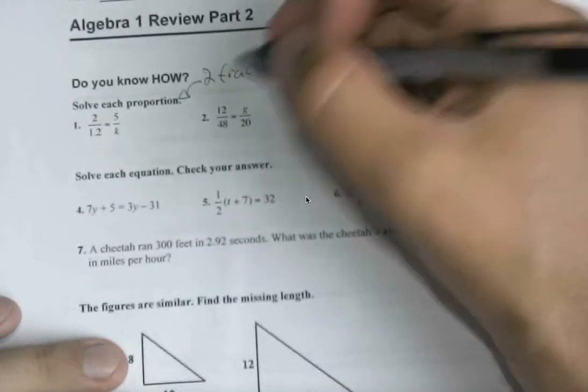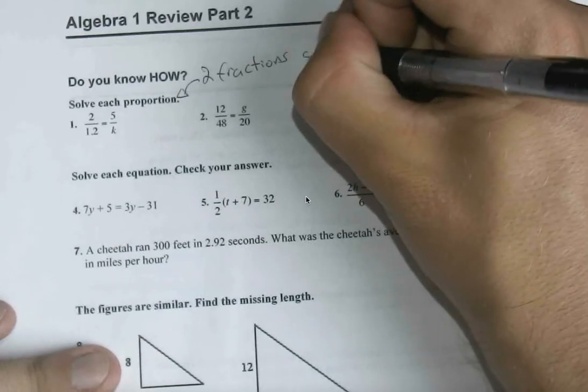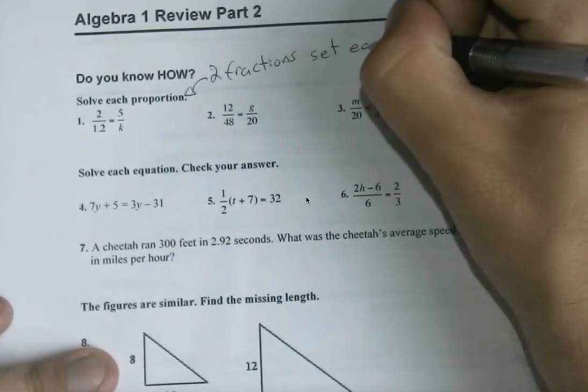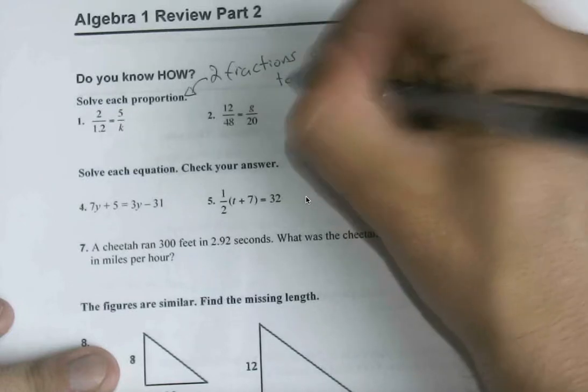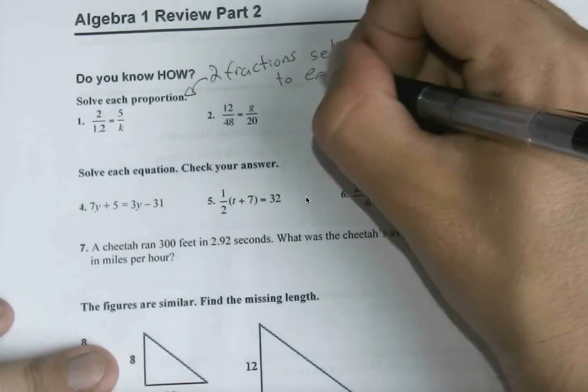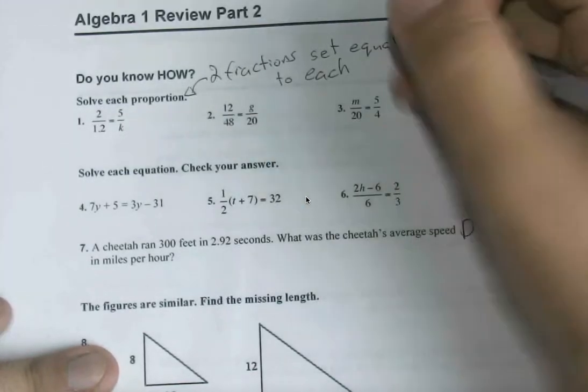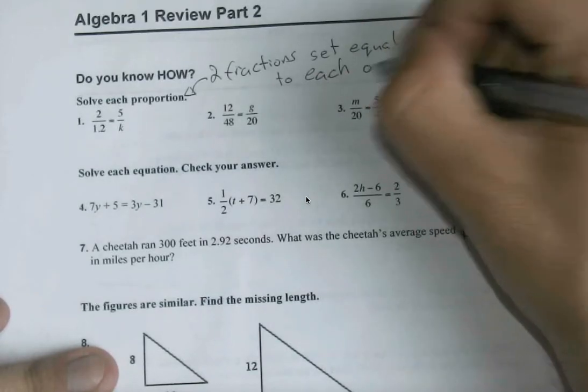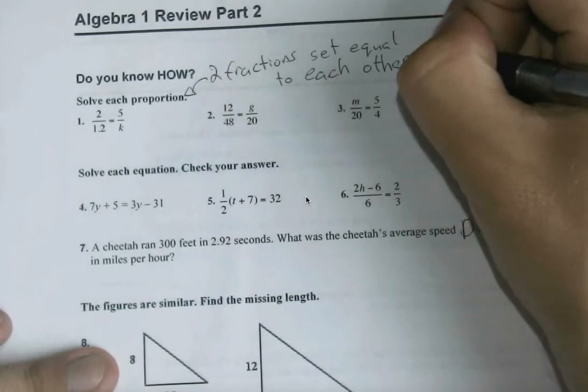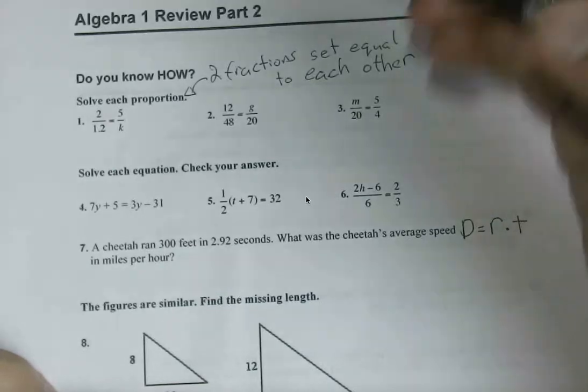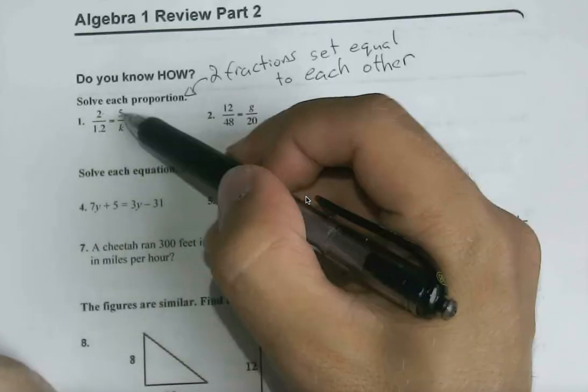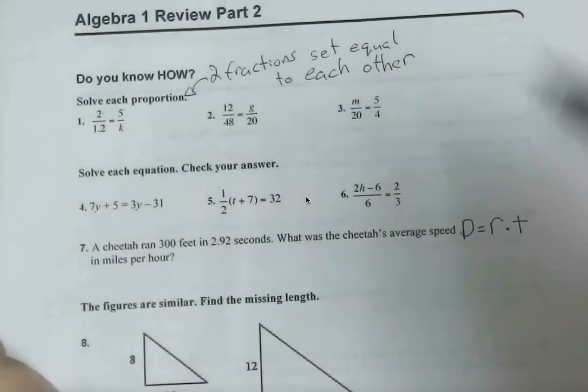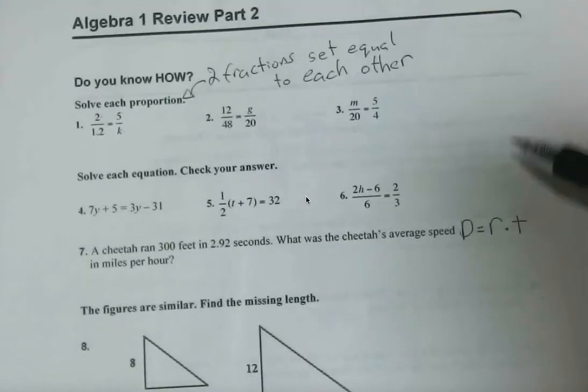We see fractions pretty much down the line. So this is dealing with two fractions set equal to each other, and for these first three we're solving it, meaning that one of the four parts of the fraction, whether it's the numerator here or here, denominator here, denominator here, it's something that we don't quite have.